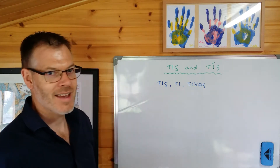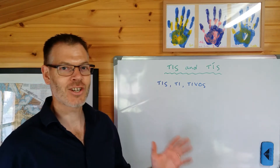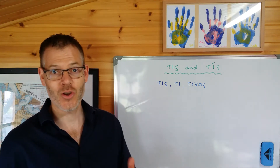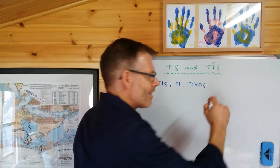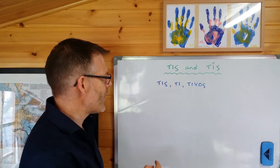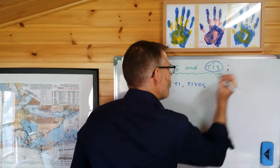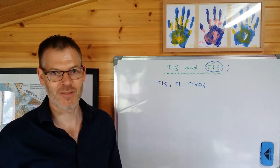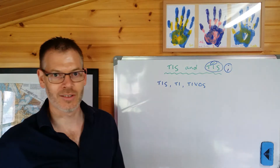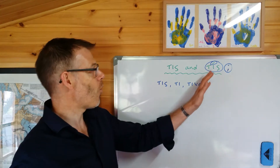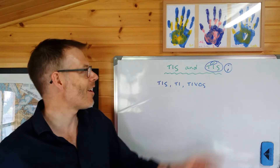Tis with the accent on the iota is a question word — the interrogative pronoun. It means who, or which, or sometimes what. The way I encourage you to remember the difference between them is that the one with the accent will always come with a question mark at the end of the sentence. Technically speaking, Duff makes the point that it works ninety-five to ninety-nine percent of the time it will have the accent.